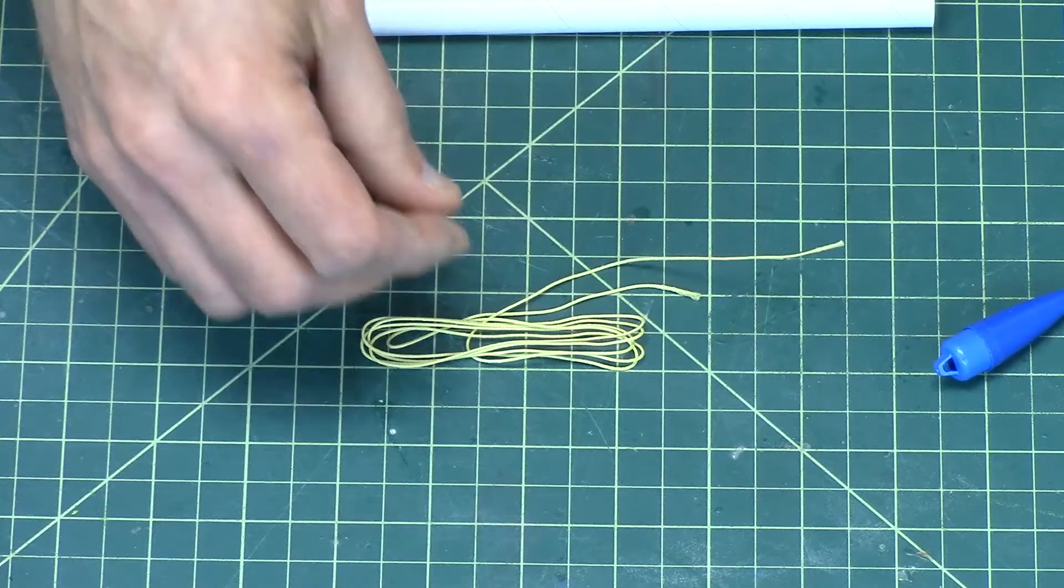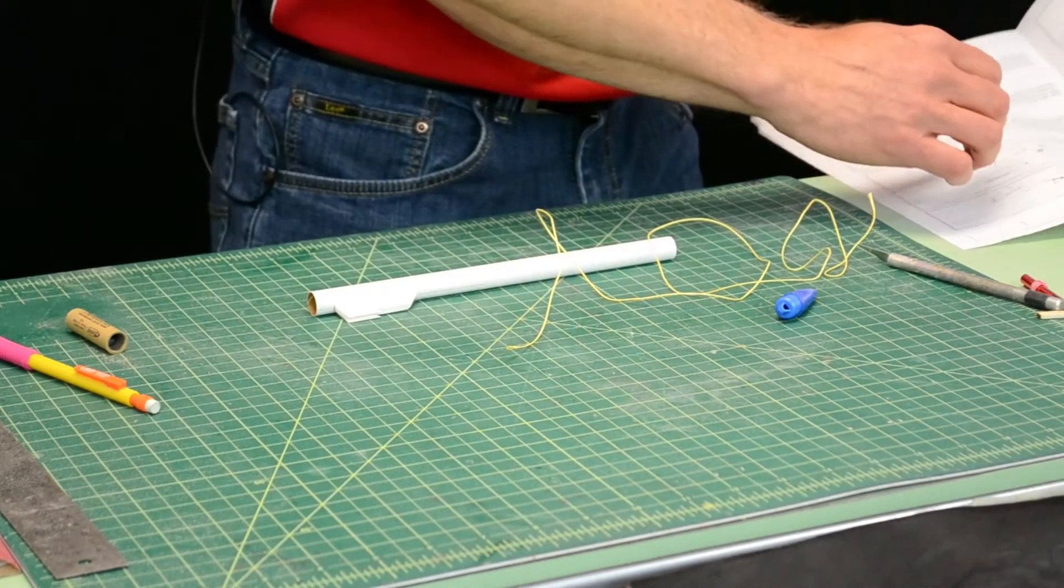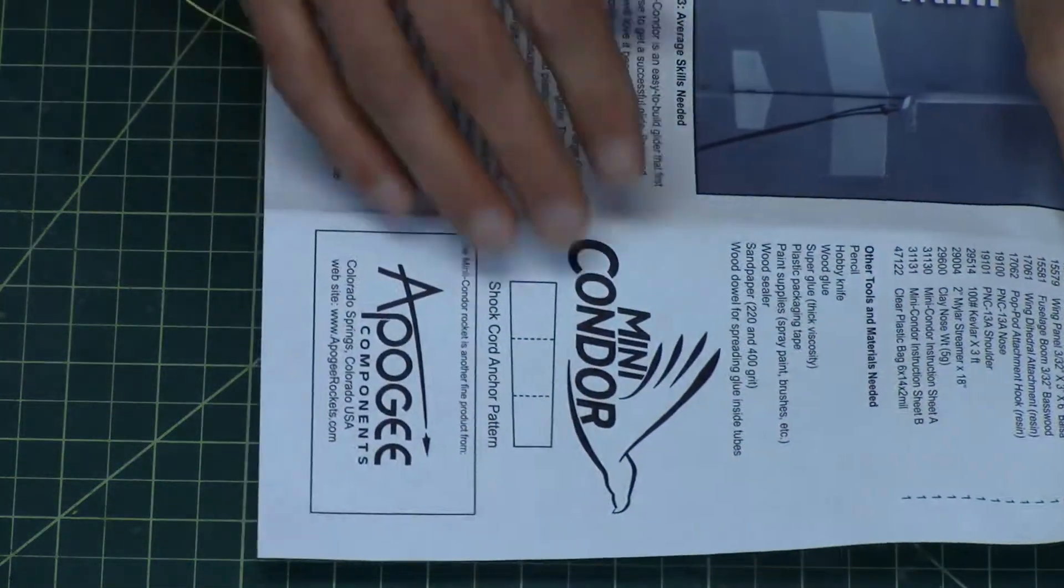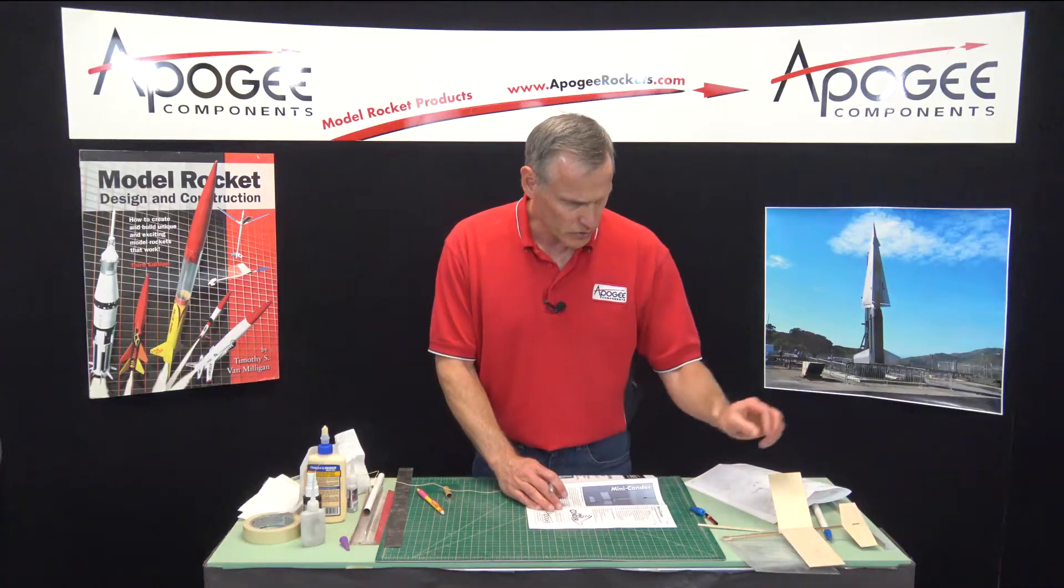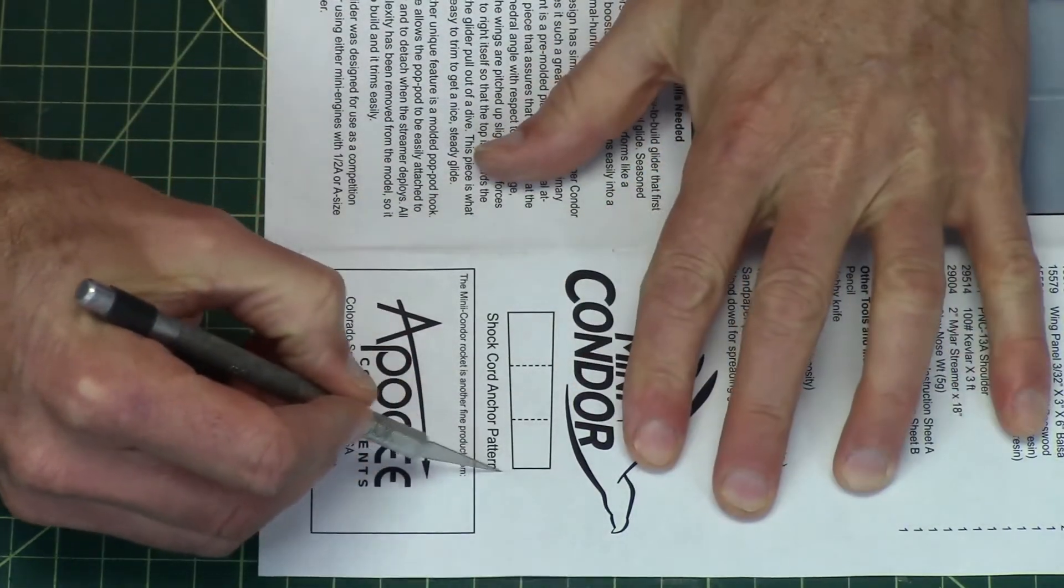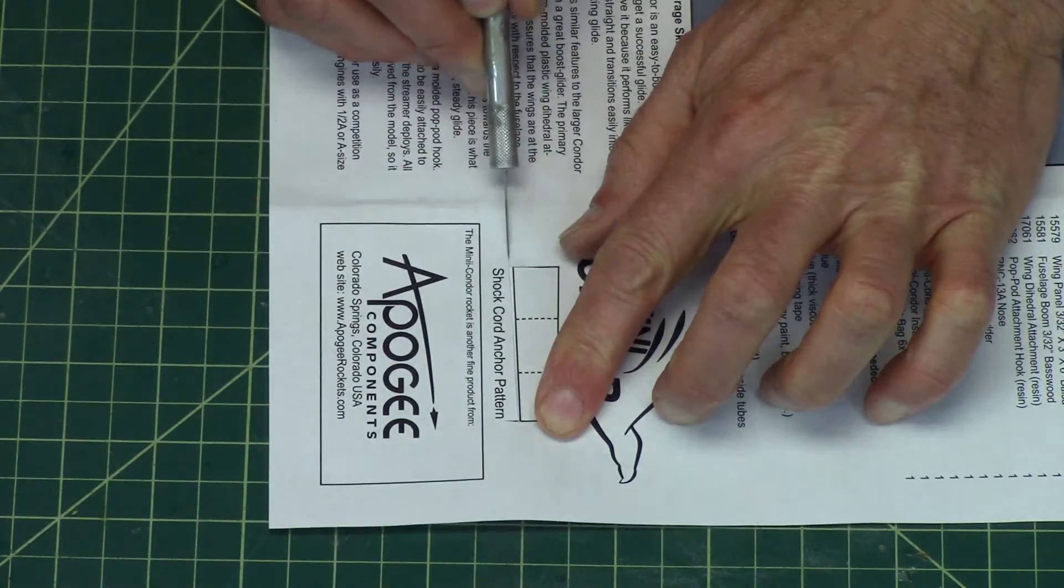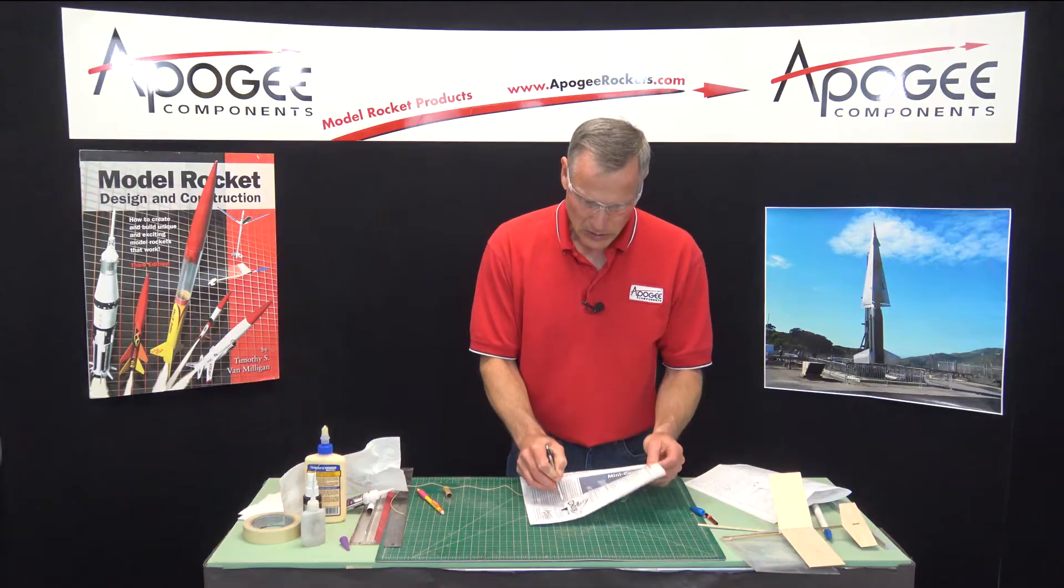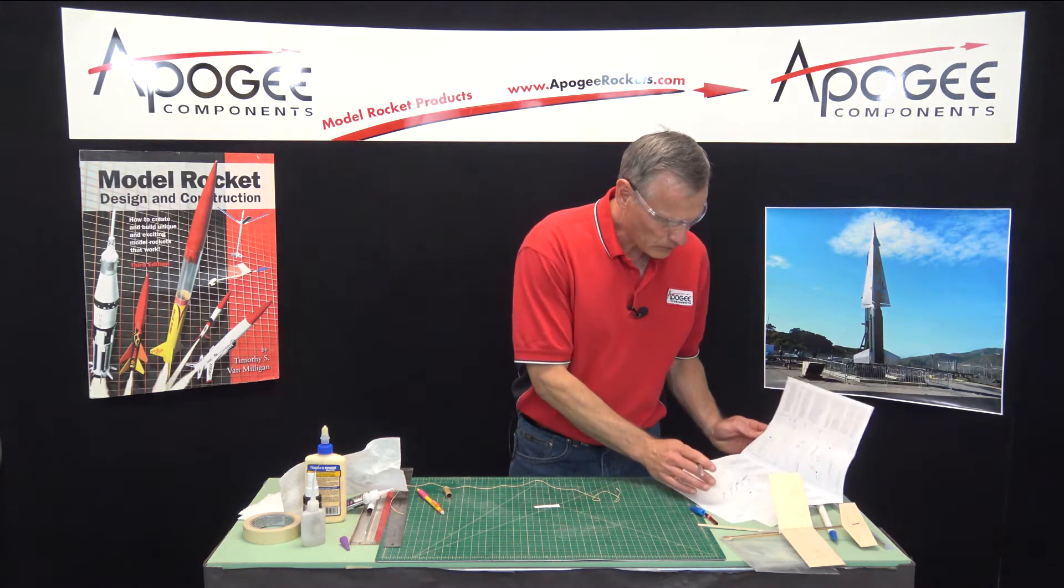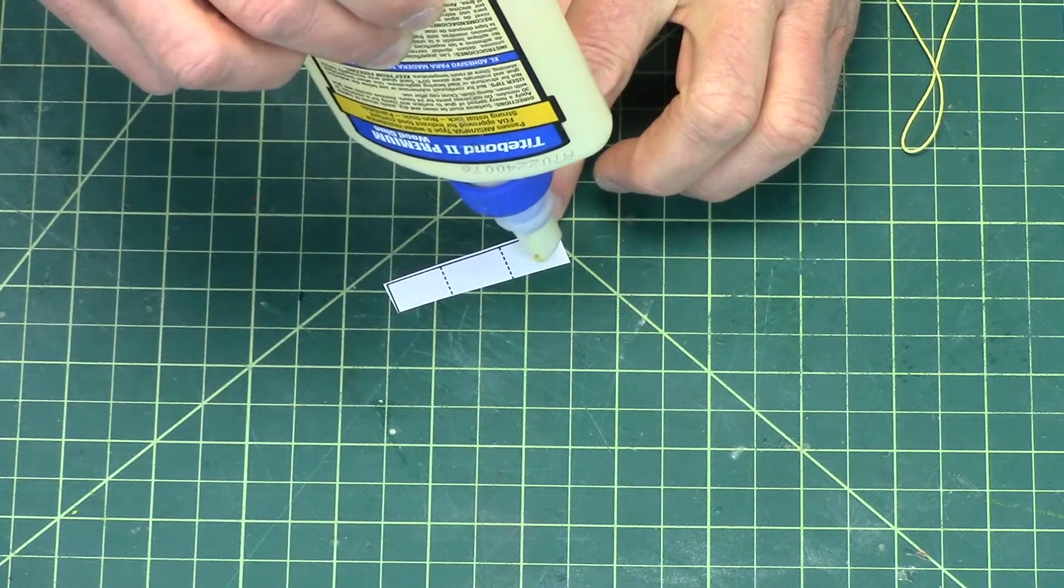Okay, so now the shock cord, we're going to have to take the instruction sheet, and there's a pattern here on the front, and we need to cut that out. You can use a pair of scissors, or you can use a hobby knife. And then take some wood glue, put a little bit on there. Smear it around like that.